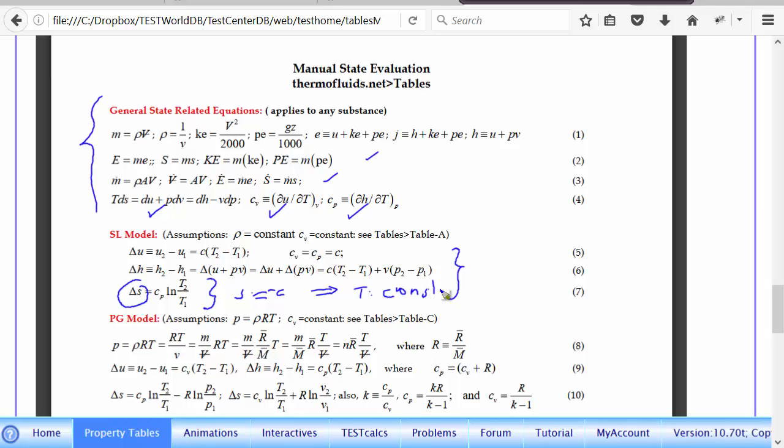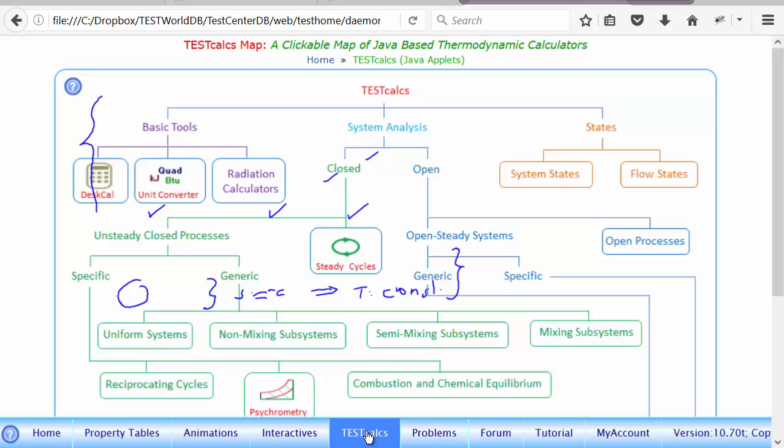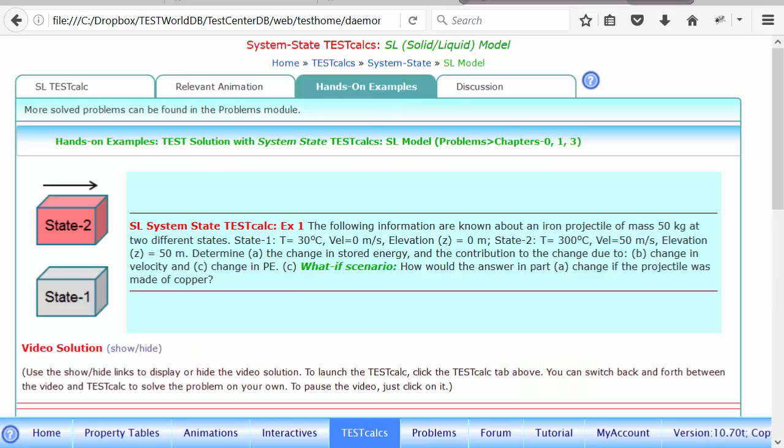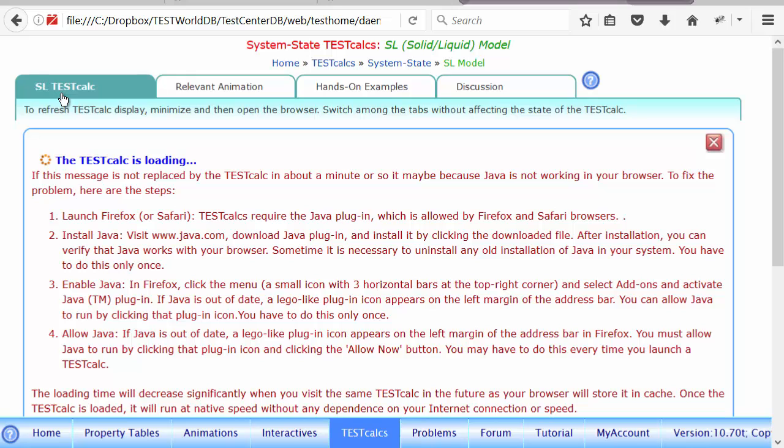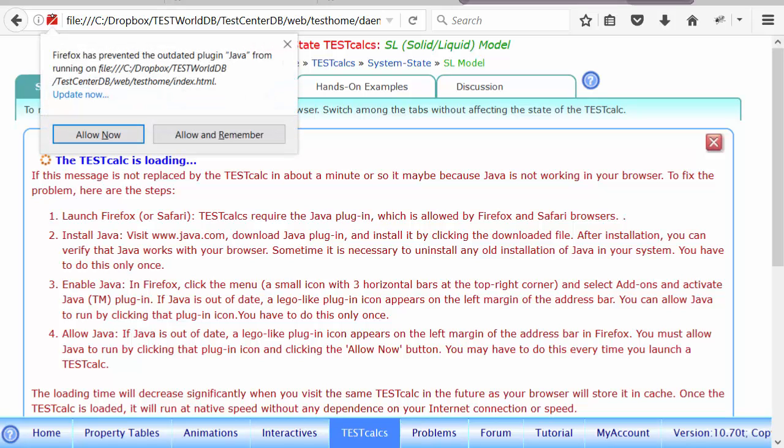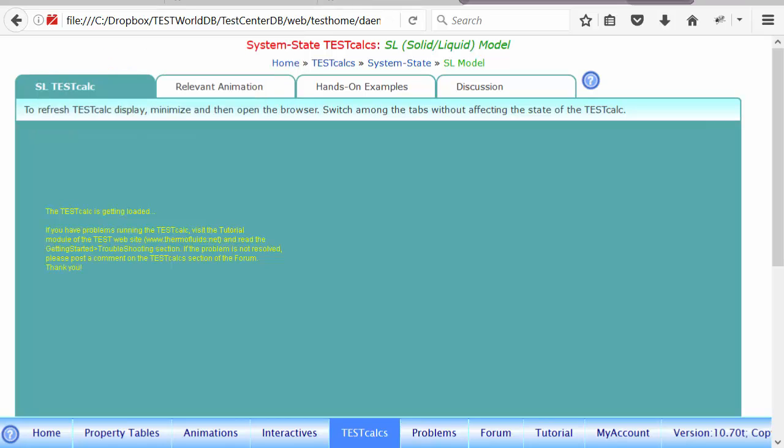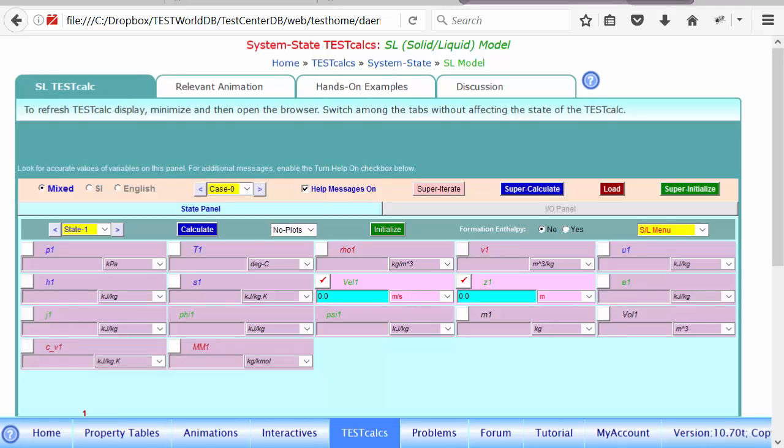We'll stop here. Before we stop, let me just show you how to launch TestCalc to evaluate a state. If you go to TestCalc, you can launch a system state or a flow state TestCalc. If you go to system state, just click on the SL model. There we have it. If you go to this tab, then it will launch. You have to click here and ask it to allow Java, and then it launches.